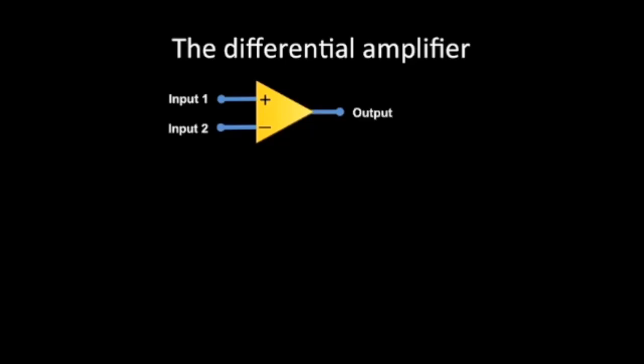Brainwaves recorded on EEG have amplitudes in the order of microvolts. What a differential amplifier allows us to do is filter out other ambient electromagnetic noise.